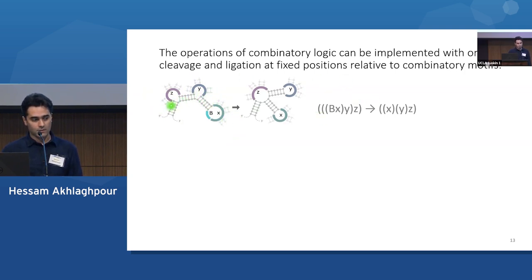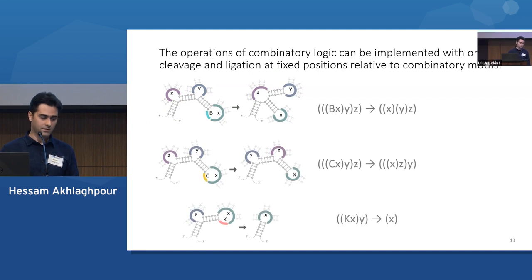And all you need to transform this to this is just an enzyme that comes in, recognizes this B motif, and executes some cleavage and ligation operations that are just determined locally. It only needs to know, like, relative to the B motif, where do I need to cleave, where do I need to ligate, and then it will produce this structure on the right. So that's one example for the B combinator. Here are two other examples for C and K.